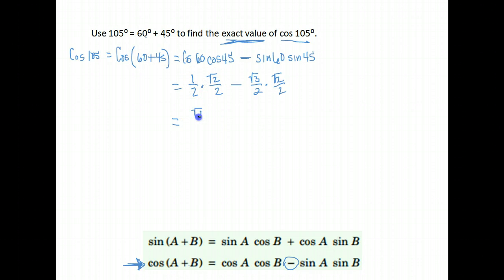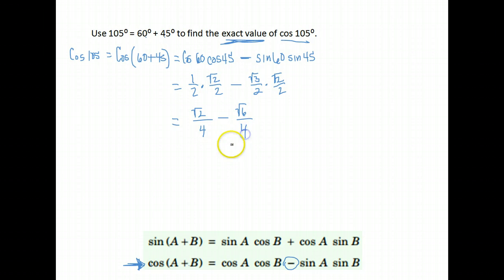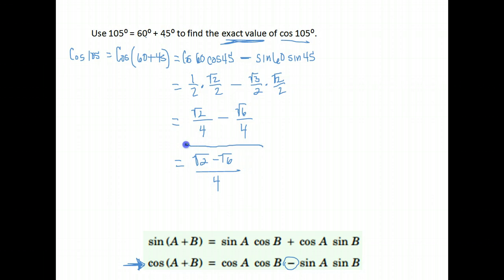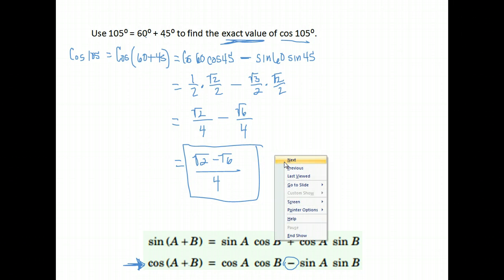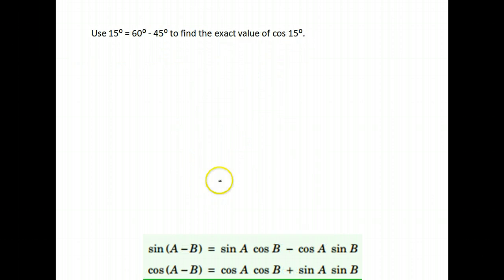Multiply. 1 times the square root of 2 is root 2, and 2 times 2 is 4. Root 3 times root 2 is root 6, and 2 times 2 is 4. They have a common denominator, so I can combine them. I can't subtract root 2 and root 6 and leave it as an exact value, so I just leave them. My answer is root 2 minus root 6 over 4. That's the exact value of the cosine of 105.